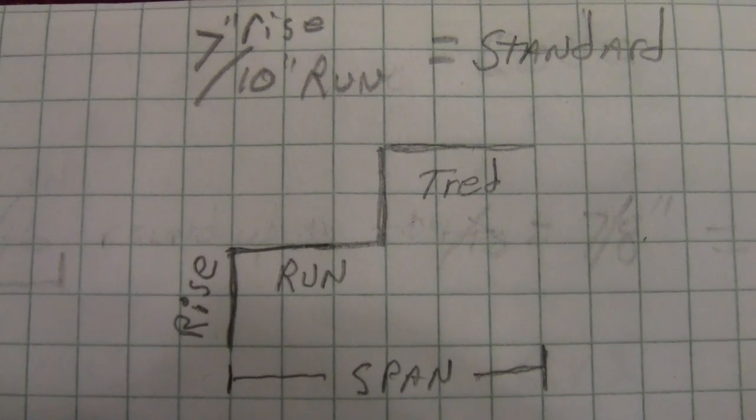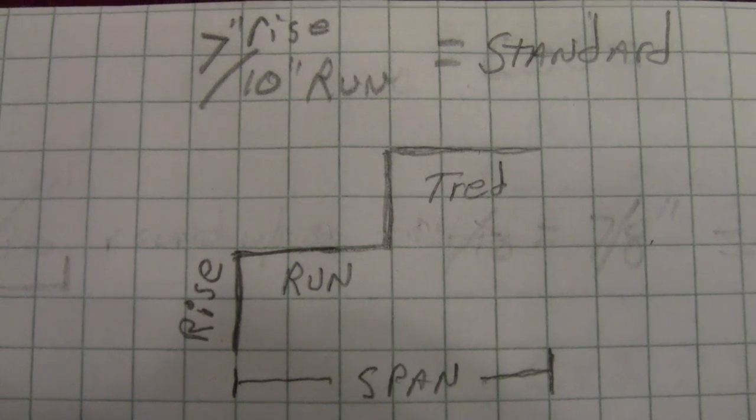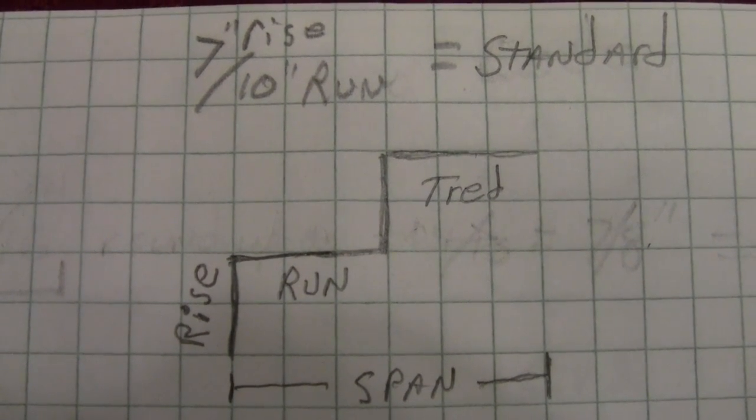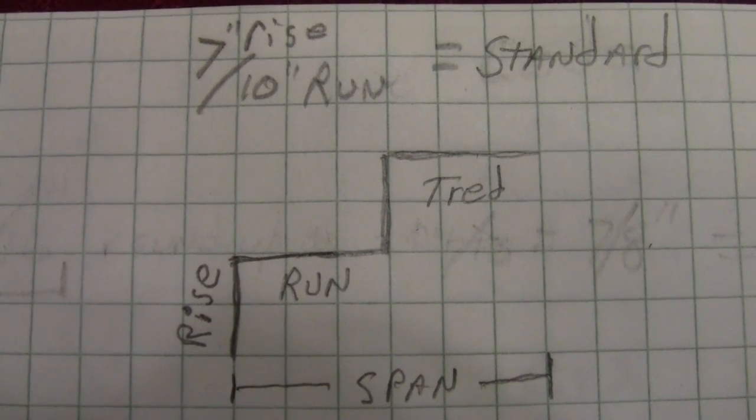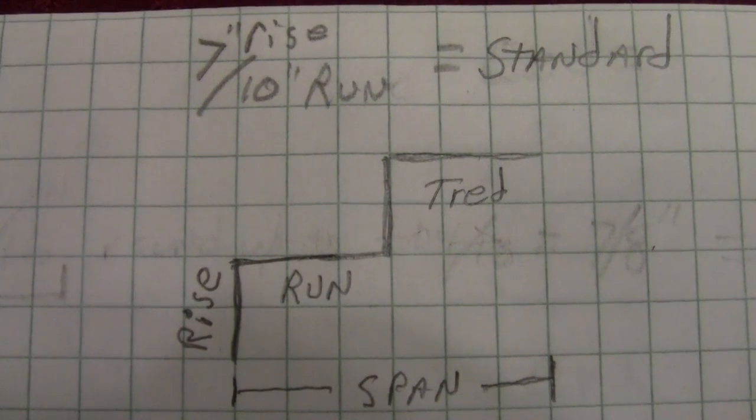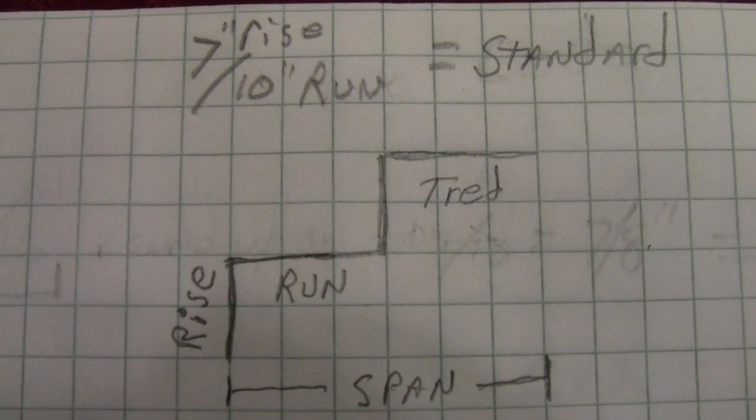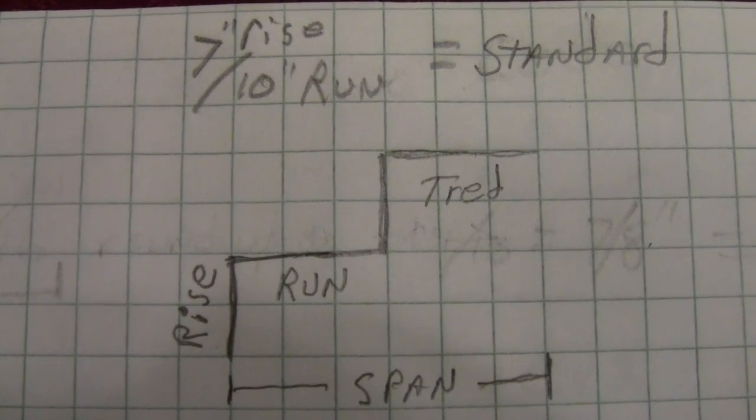Run is kind of the part you step on. The rise is what gets you up to the next level. And also a term that's useful is the span. Now that is the distance for each one of your runs all combined together, but does not include the length of the landing.